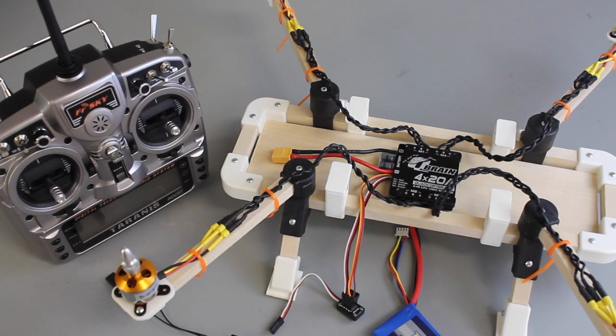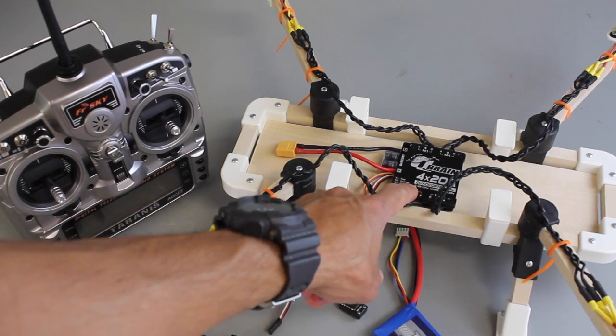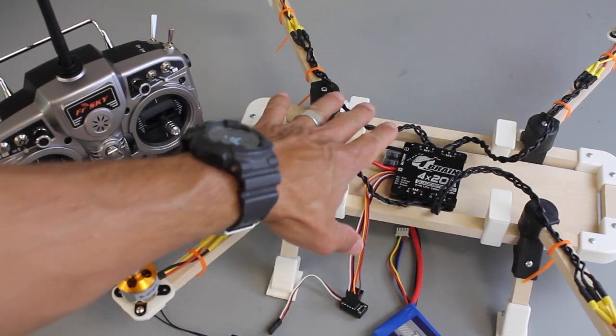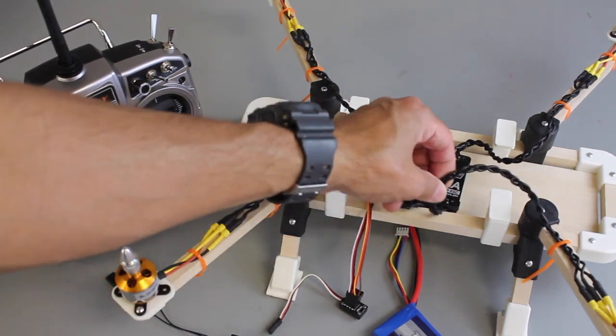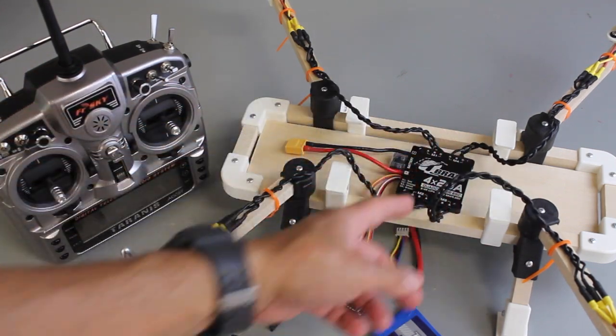As I continue with this Quad Lugs build, I wanted to share this Q-Brain ESC calibration setup. So I have everything wired up. You'll notice that I put my braiding skills to good work. There's a lot of wires coming off here, so I went ahead and braided them.